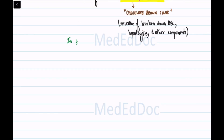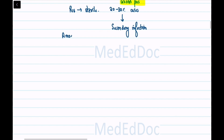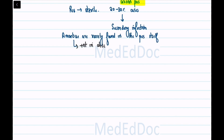In some patients, pus may be mixed with bile, resulting in green pus. While the majority of cases present with sterile pus, about 20–30% of cases may experience secondary infection. Amoebae are rarely found in the pus itself but can be present in the abscess cavity wall.